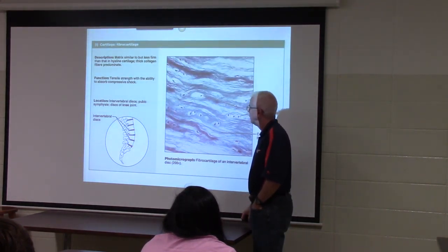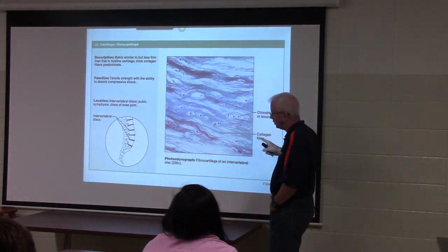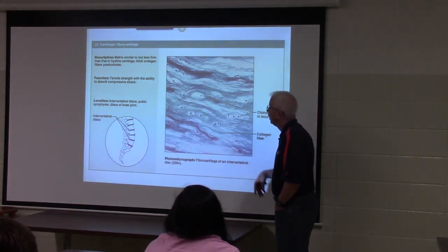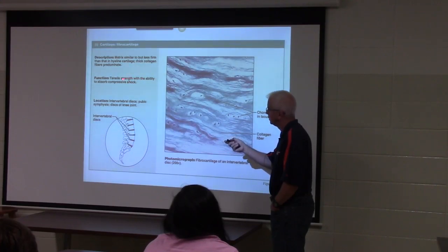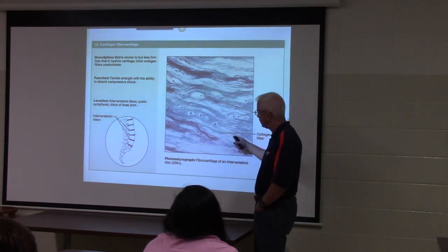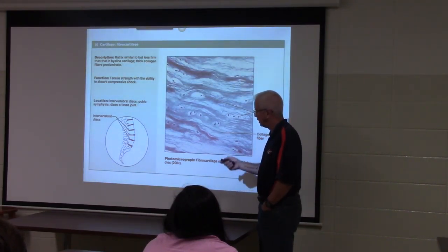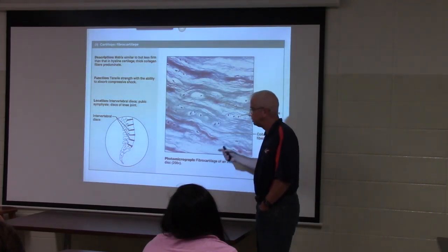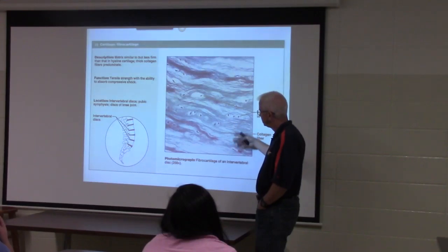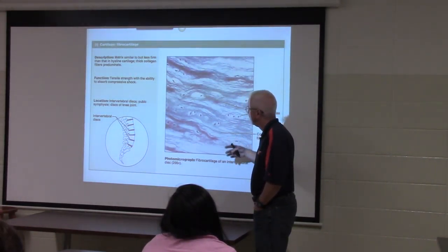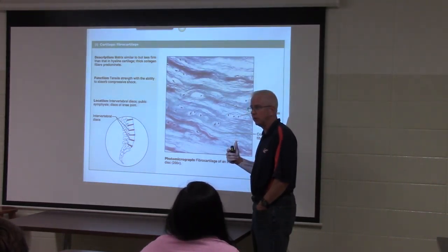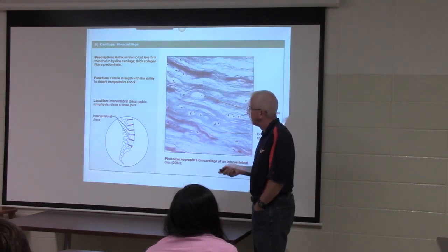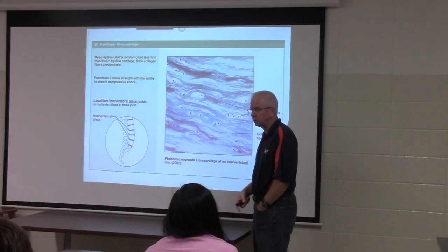The third type is fibrocartilage. Its major structural protein is collagen, which is denser, giving it great tensile strength and ability to absorb compressive shocks. It is found in weight-bearing locations, such as the intervertebral discs of the vertebral column. These soft tissue pads sit between each bone of the vertebral column and help with compressive shock absorption.